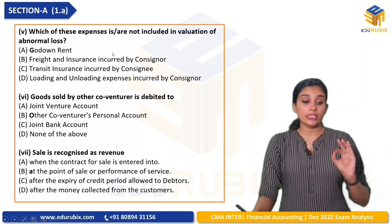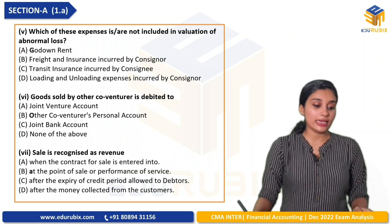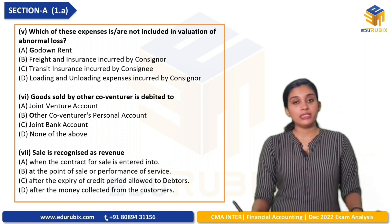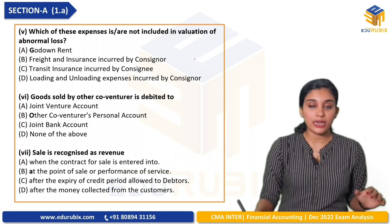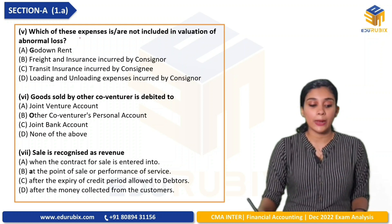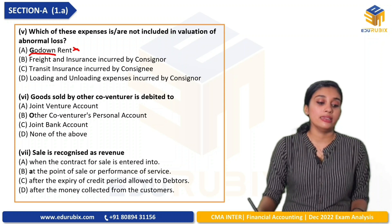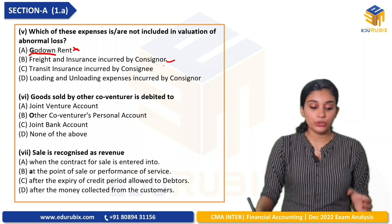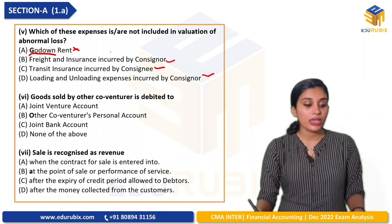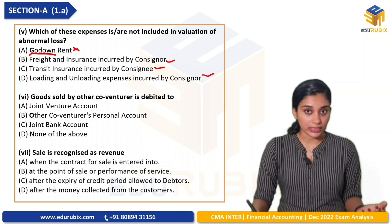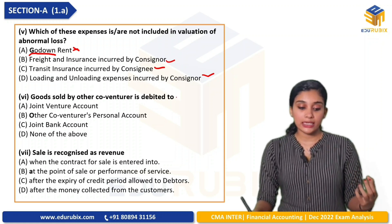Next question: which of these expenses are not included in the valuation of abnormal loss? Abnormal loss valuation includes freight and insurance incurred by the consigner, transit insurance incurred by the consigner, and loading and unloading expenses incurred by the consigner. Recurring expenditures are not included in the abnormal loss valuation — go-down rent is a recurring expense. Therefore, go-down rent is the correct answer as it is not included.